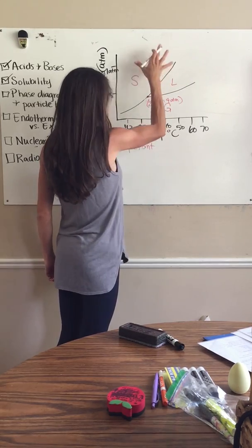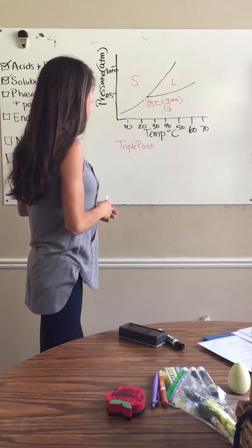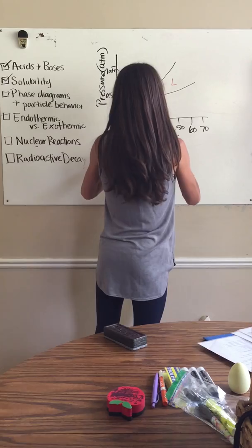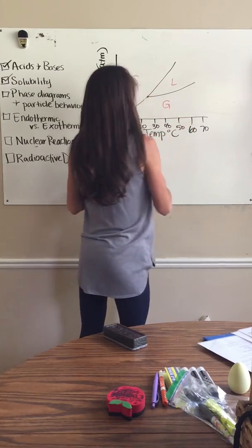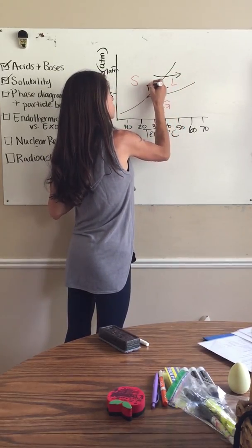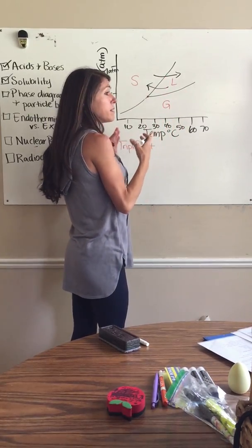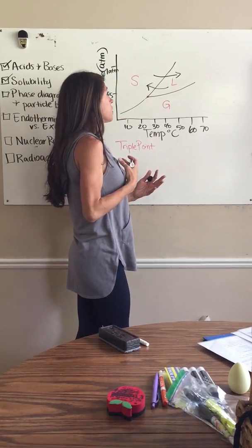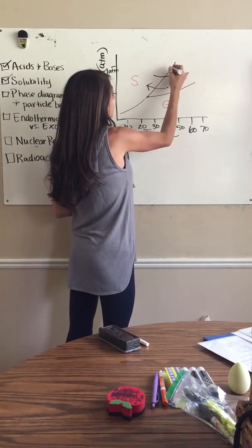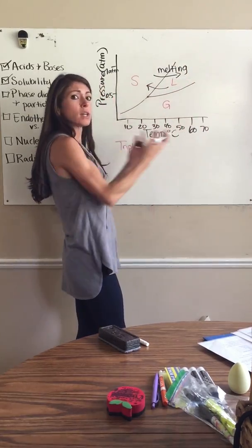That point where all three phases converge — at about 0.4 atmospheres and 25 degrees Celsius — is called the triple point. It is the point where all states of matter for this particular substance exist simultaneously. In each section, each one of these curves is where we see the potential for phase changes to occur. Solid can go to a liquid, liquid goes to a solid. If a solid is going to a liquid, the particles are gaining energy — that is endothermic. Solid to liquid is melting, which is endothermic.